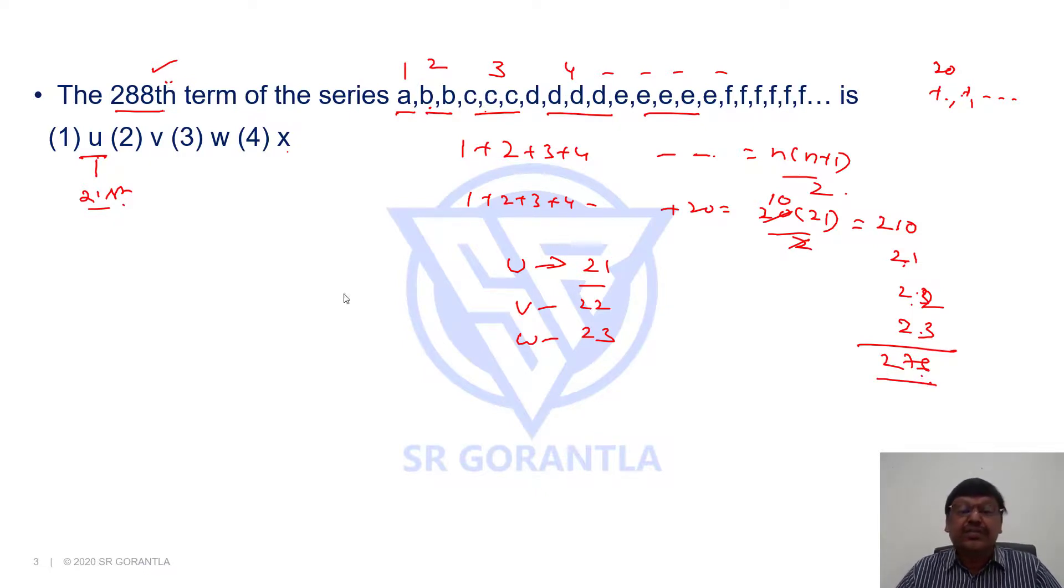I want 288th term. If I take x, x will be written 24 times, from 277th letter till 24 terms, 276 plus 24 will be 300. So the next 24 terms will be x only. Obviously the 288th term will be x because any term from 277 to 300 is x. Hence our answer is choice 4.